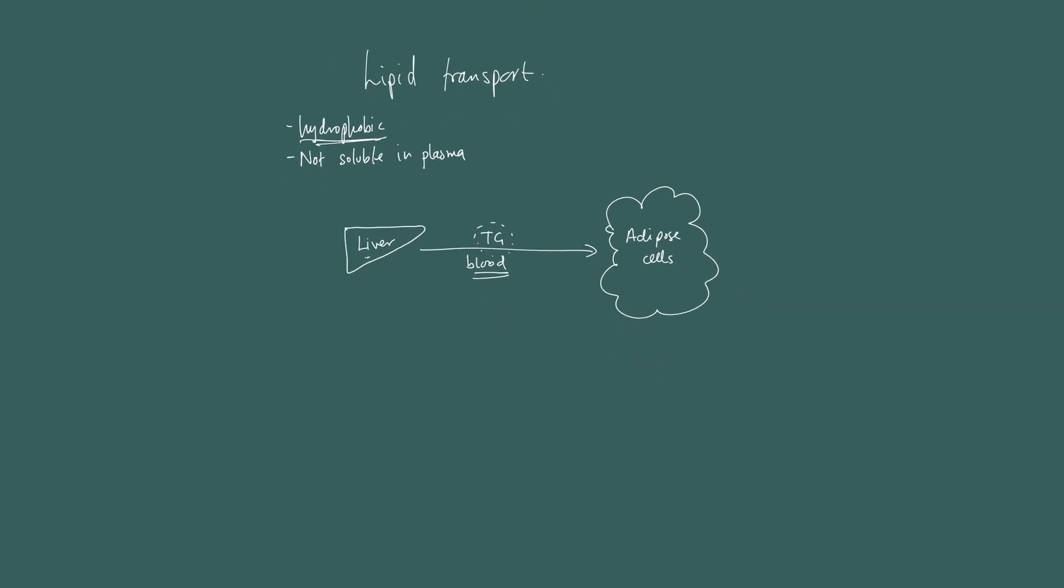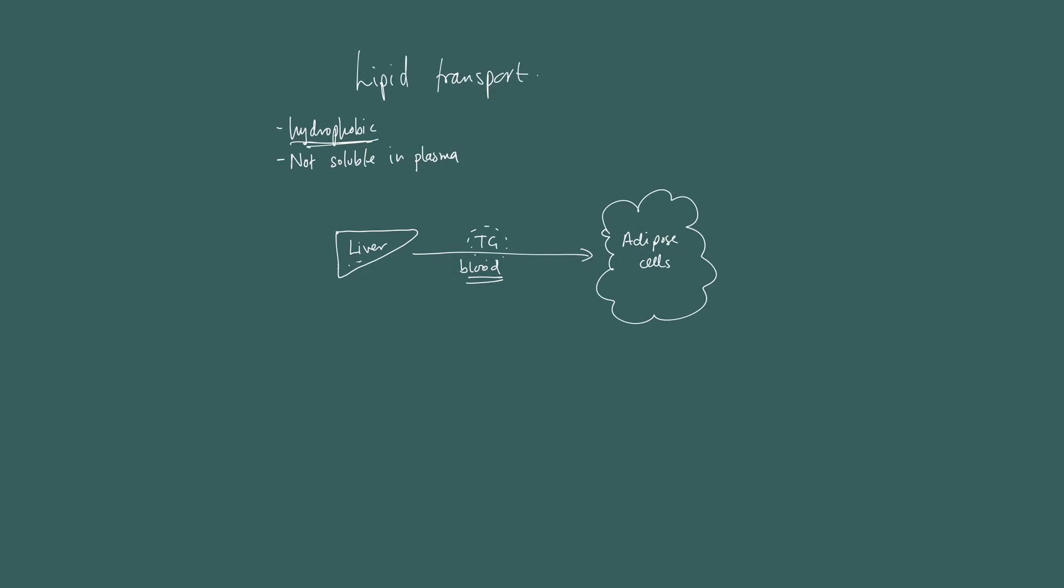The way this occurs is by the formation within the liver and other tissues of structures called lipoprotein. Lipoprotein is essentially your triglyceride molecules there in the core. And surrounding that is a phospholipid. So in the core you've got your cargo, and the cargo in this case is our triglyceride—our major energy storage molecule. Glycerol and three fatty acid chains. Surrounding that you have phospholipid.